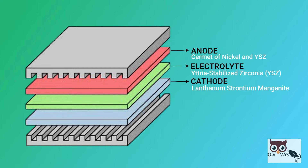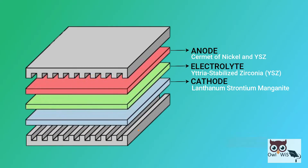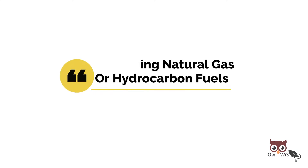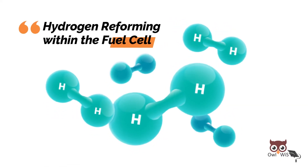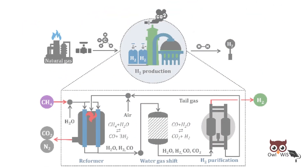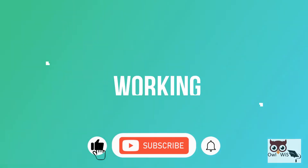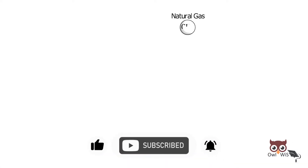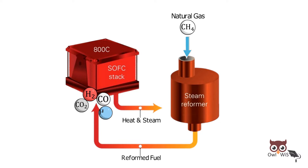Lanthanum strontium manganite (LSM) is used as the cathode material because of its compatibility with doped zirconia electrolytes. Reforming natural gas or other hydrocarbon fuels to obtain the required hydrogen can be achieved within the fuel cell, excluding the requirement for an external reformer. Natural gas undergoes a steam reforming process, producing hydrogen, carbon monoxide, carbon dioxide, and steam, with some unreformed natural gas remaining in the mixture.